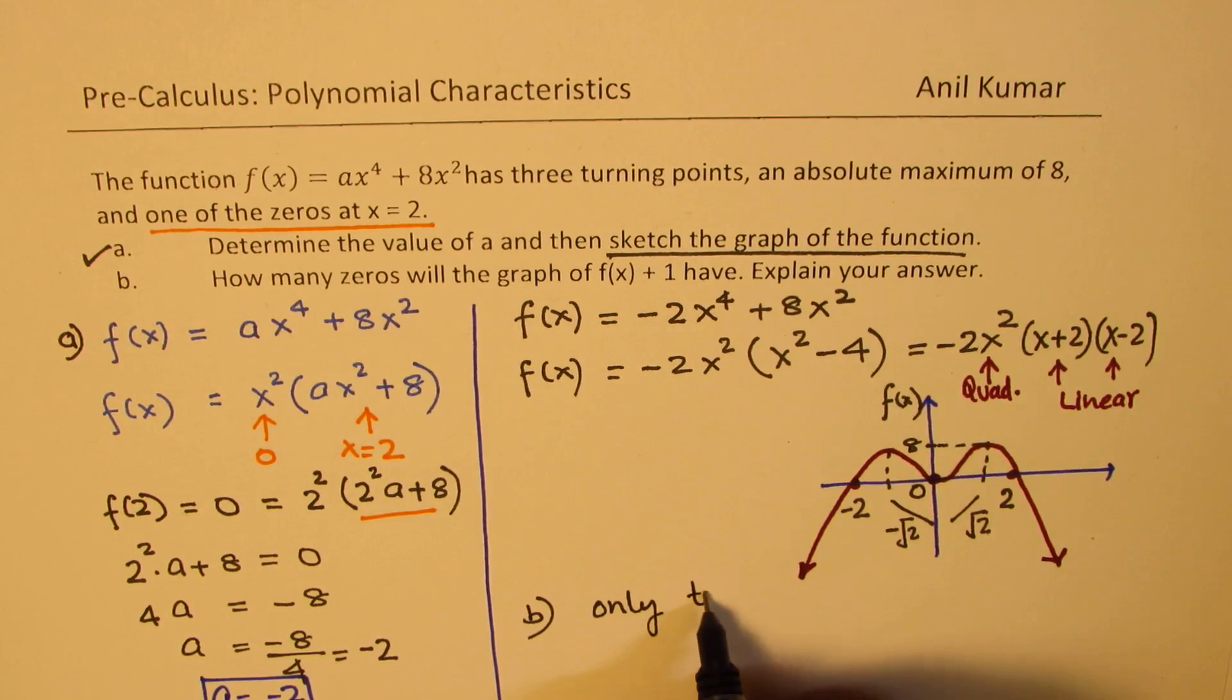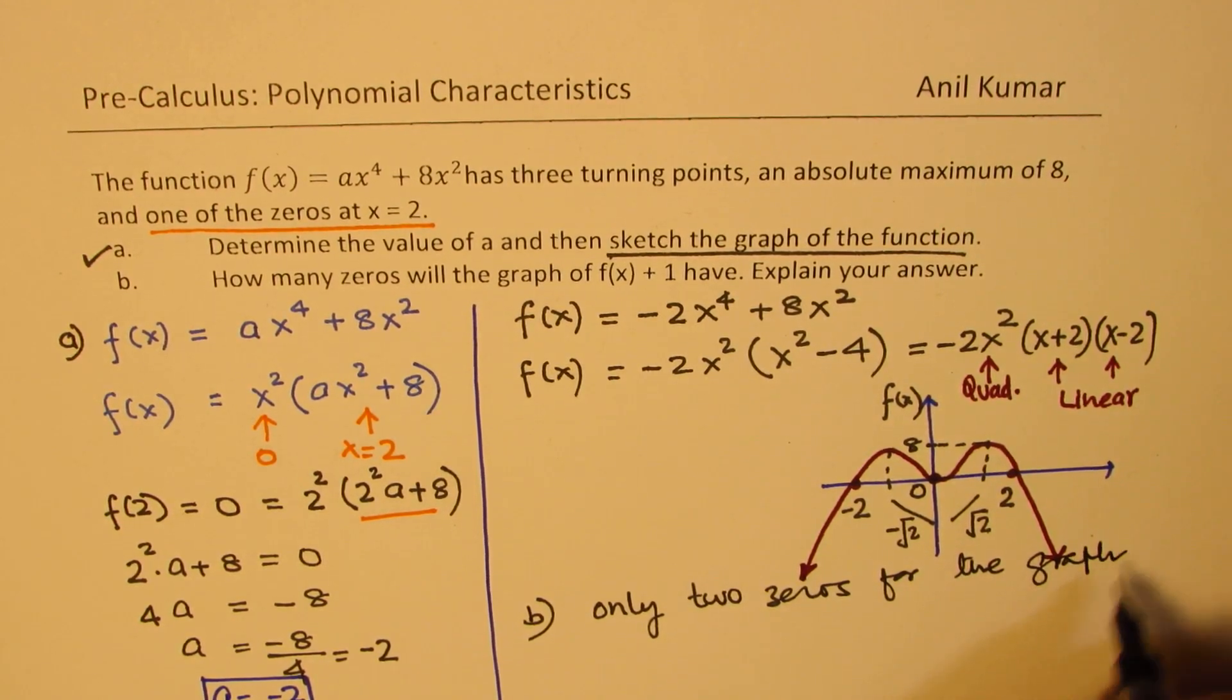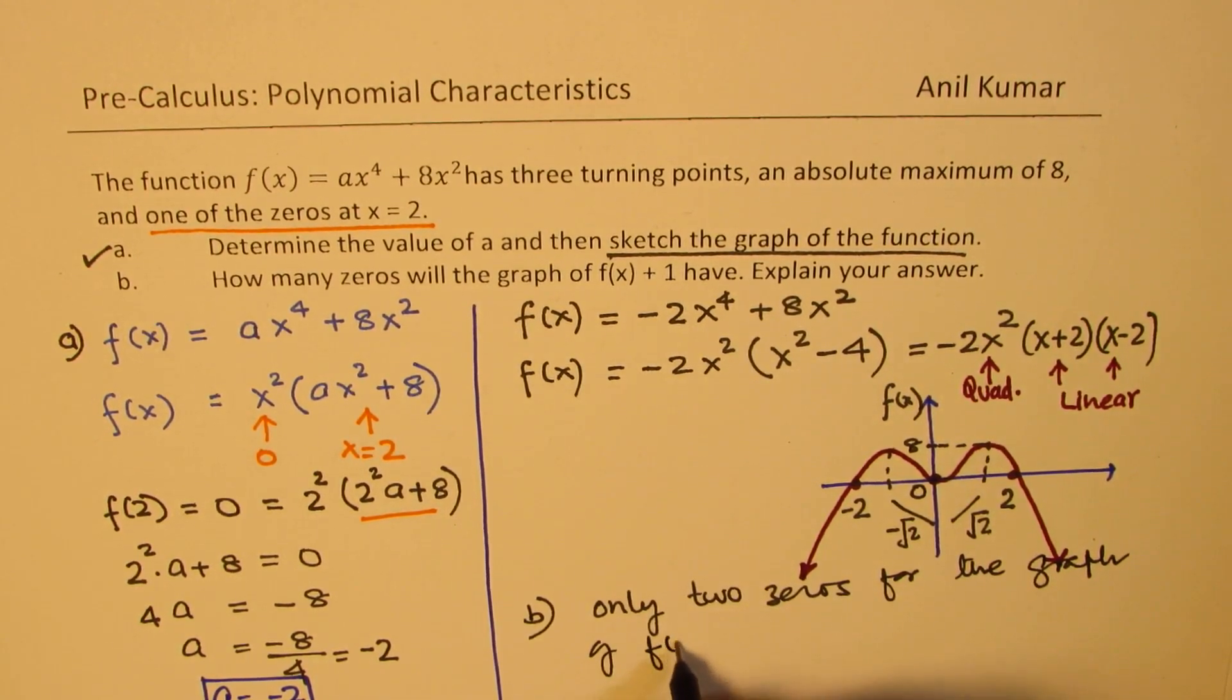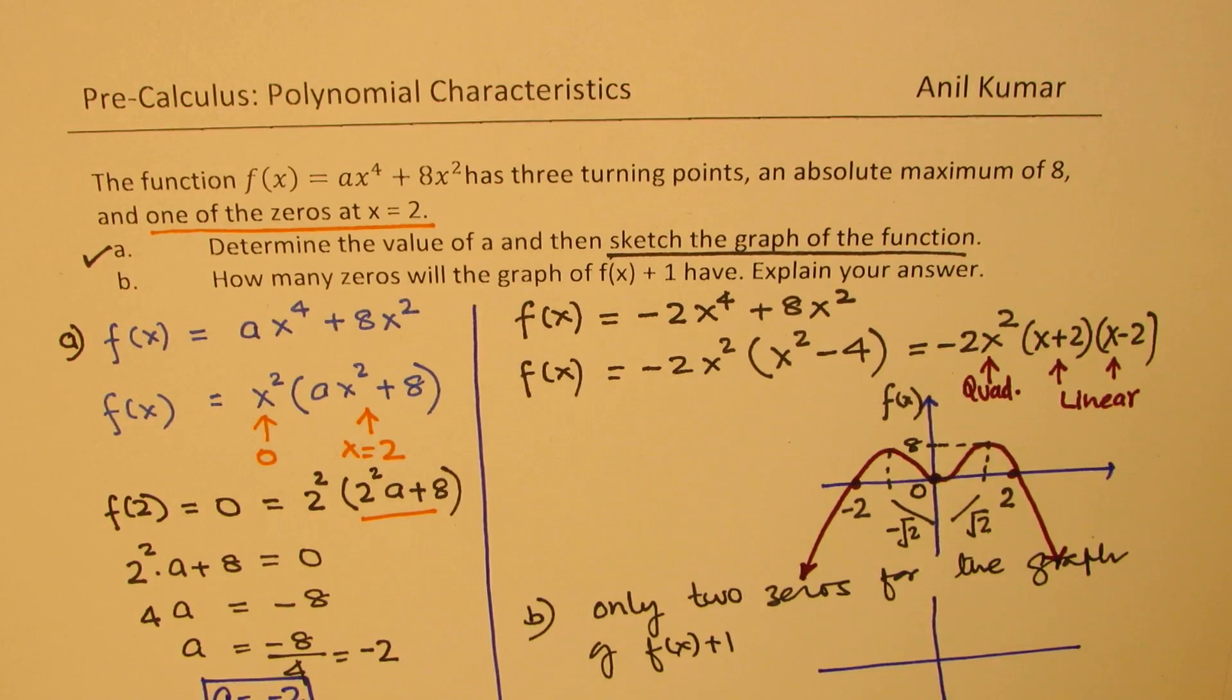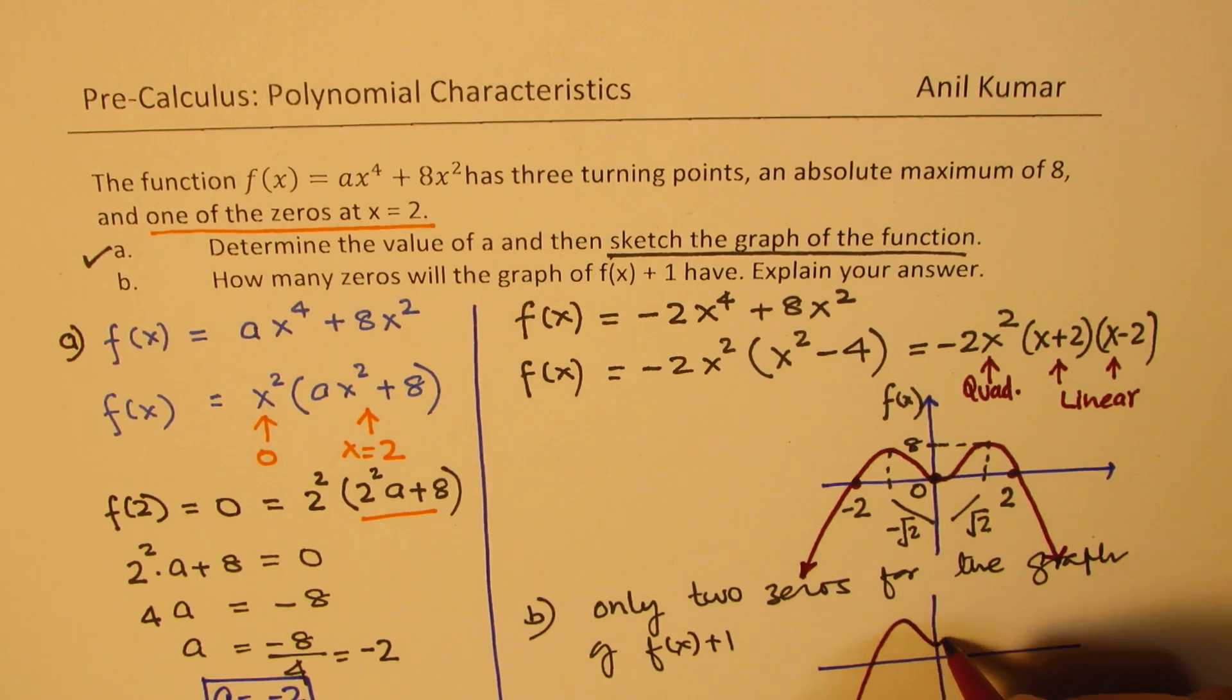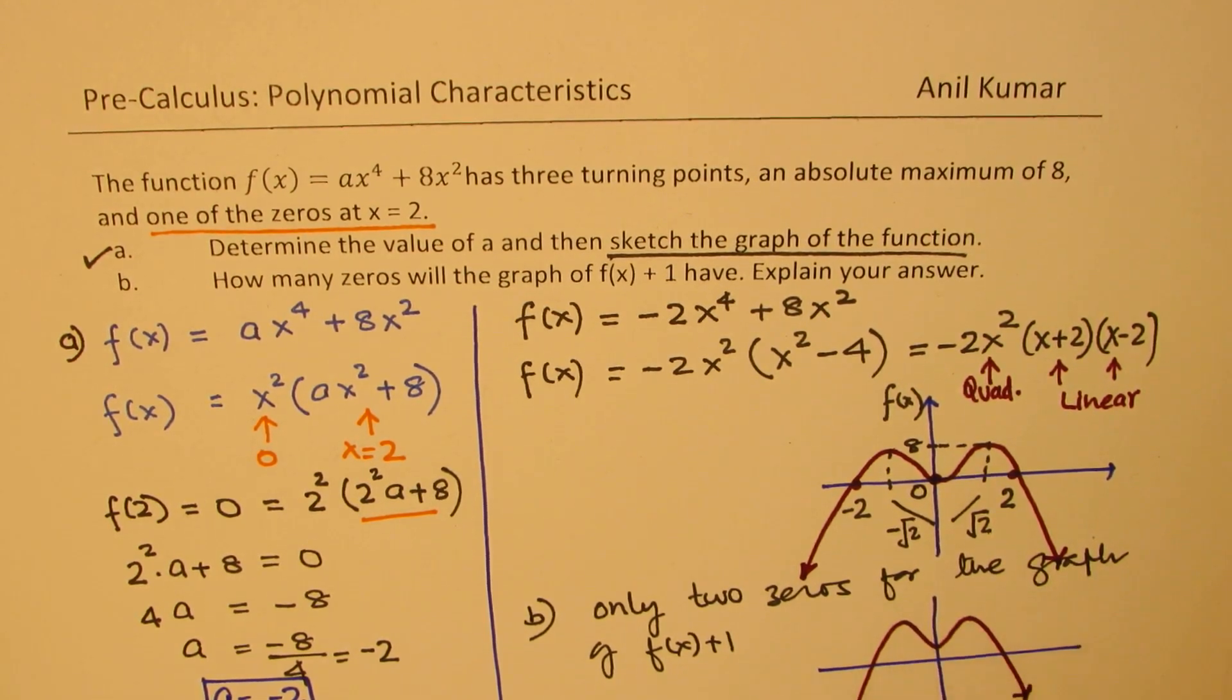Only two zeros for the graph of f(x) + 1. Reason very simple: when you push it up, the whole graph will move one unit up. And what we are going to get is something like this.